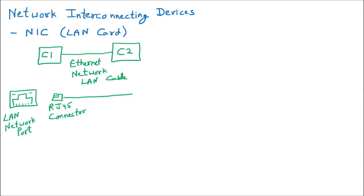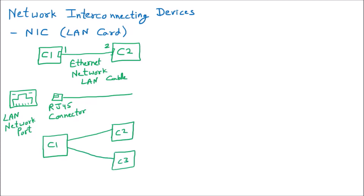So if two computers want to connect with each other, two Ethernet ports are required so that one wire can be connected — one Ethernet port on each computer. Now people thought: why can't we connect more computers? Suppose C1 wants to connect to C2 and C3 — that means two Ethernet cables and two LAN ports are needed on C1, with one port each on C2 and C3.